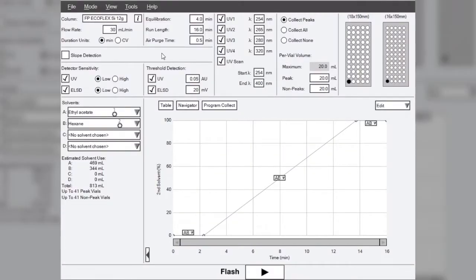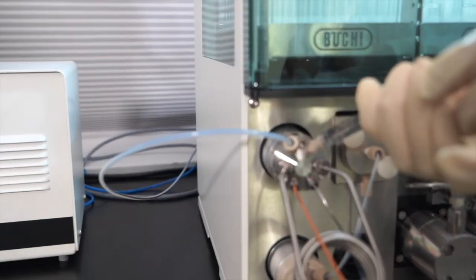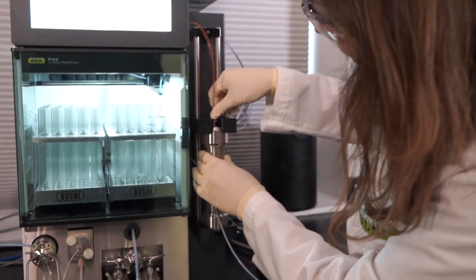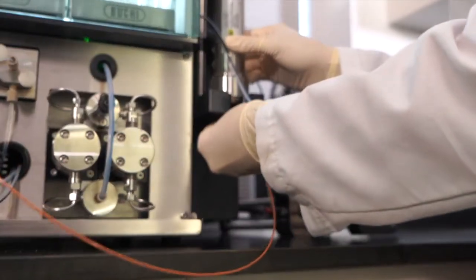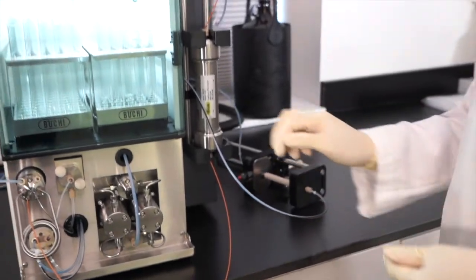If you're switching between flash and prep HPLC, change the column holder and install your column, enter your column name, flow rate, and design your gradient. Inject your sample by using the lower lock syringe. Any additional liquid larger than the loop size will drain into the waste. We offer various sizes of prep HPLC loops, 5 mils up to 50 mils.